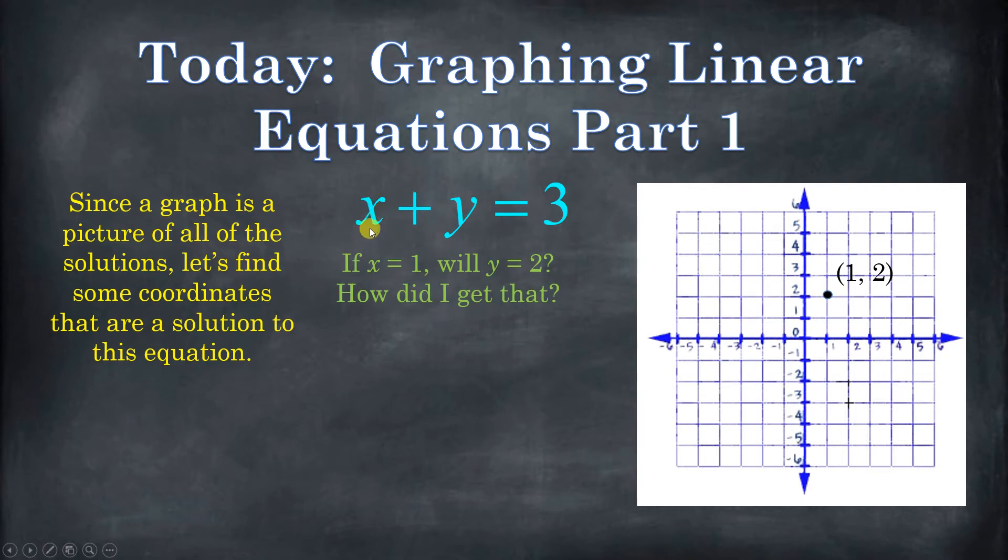I just picked a number for x. I said, well, what would happen if x was 1? So I put a 1 right here, and then I just read it. 1 plus what equals 3? Well, 1 plus 2 is 3. So if x is 1, then y is 2. And so, what if x was 0? What would y be? Did you get 3? Right, 0 comma 3. So 0 comma 3 is also a solution.